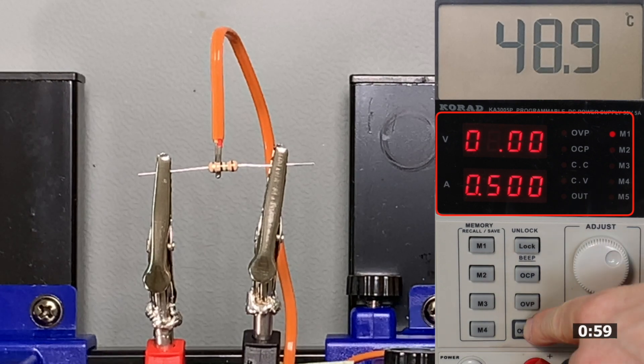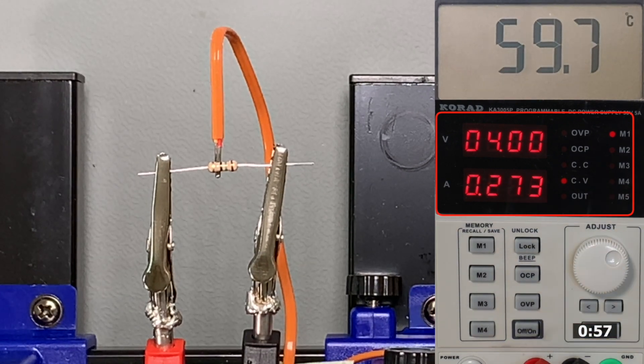We continue with a level of 4 volts in the next measurement and 275 milliamps, which heats up the resistor to over 70 degrees now.